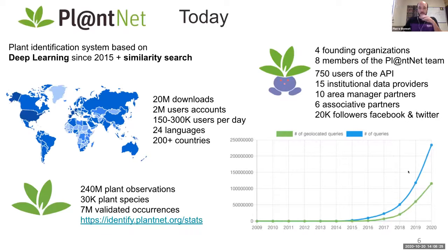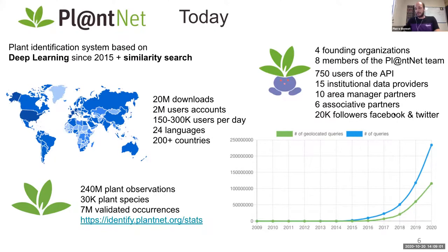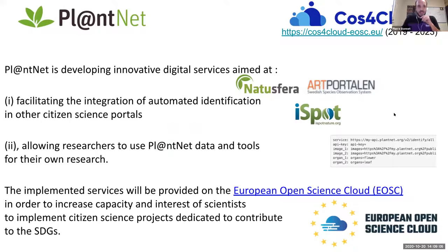Up to now we count 20 million downloads of the mobile app, two million people have created user accounts, and in the current period we count between 150,000 and 300,000 daily users. The community has translated the platform into 24 different languages. The platform has contributed to aggregate 260 million plant identification requests on around 30,000 plant species around the world.